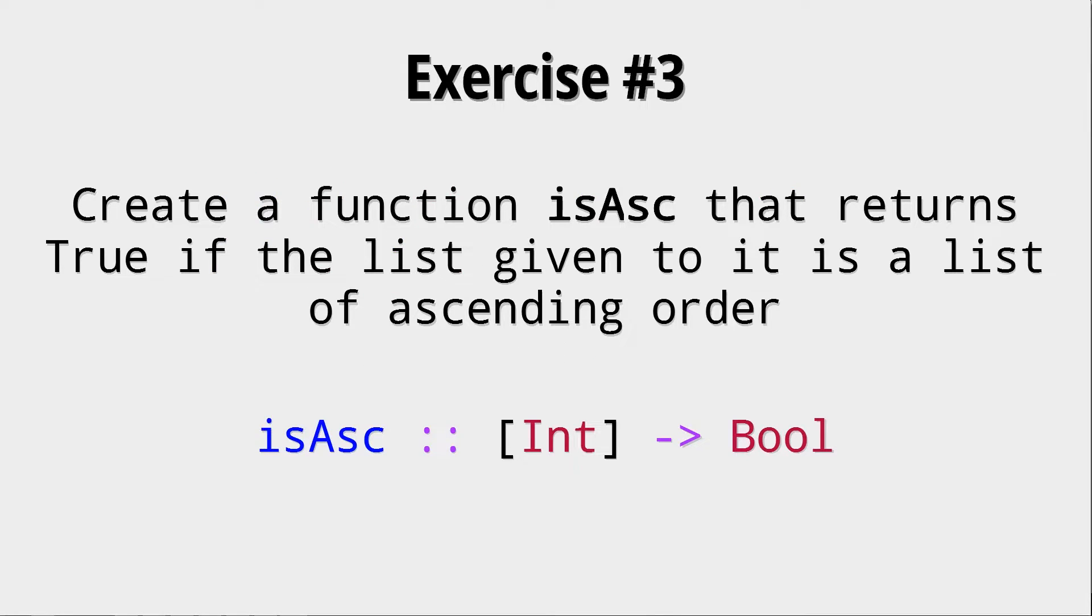Let's look at exercise three. Create a function isAsc that returns true if the list given to it is in ascending order, meaning that a list 1 2 3 4 5 is ascending. A list 1 2 2 2 3 is also ascending, but a list like 1 2 3 3 2 1 is not ascending. Okay, so pause the video now.